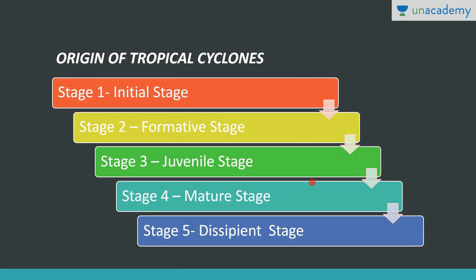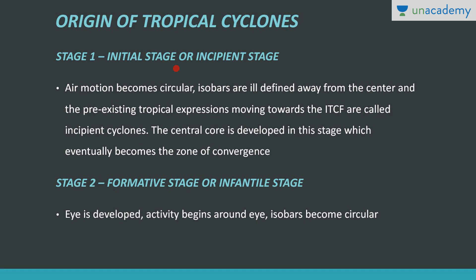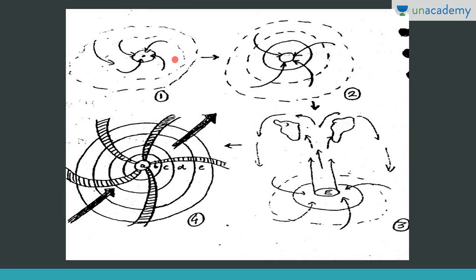The origin of tropical cyclones can be studied in different stages: initial, formative, juvenile, mature, and discipline stage. In the initial stage, air motion is becoming circular and isobars are ill-defined. Only the central core is developed, and the winds have just started converging, as seen in the diagram.